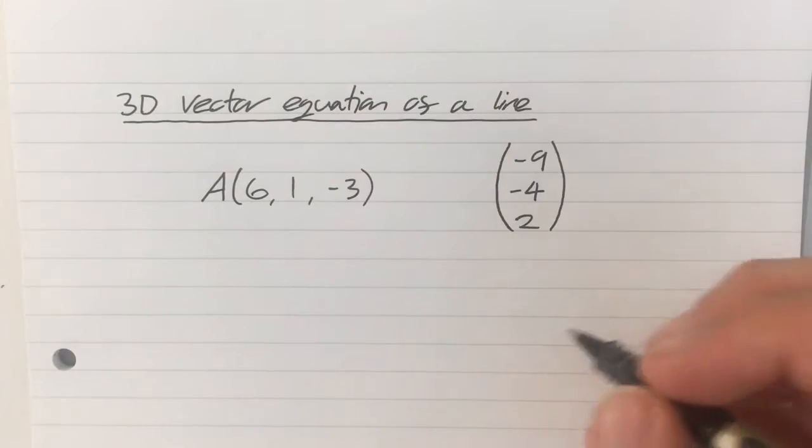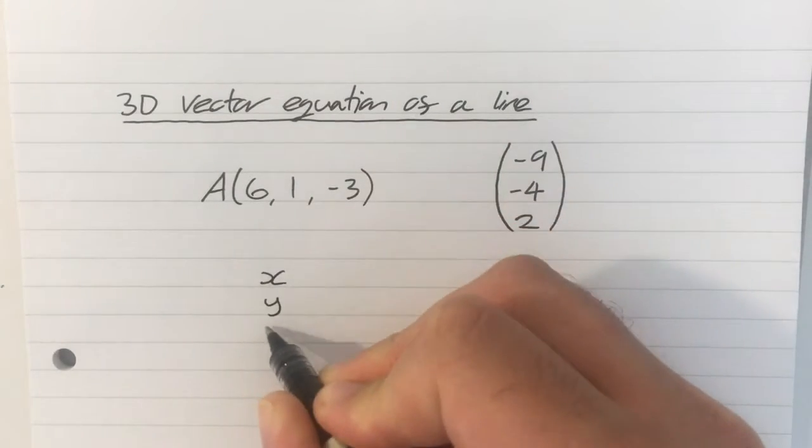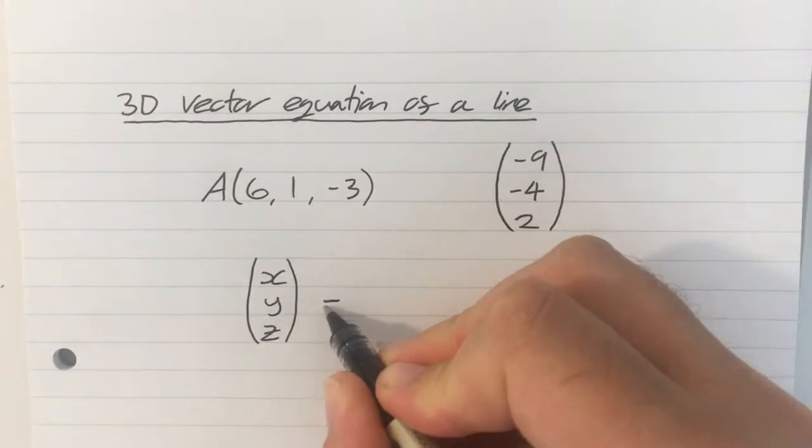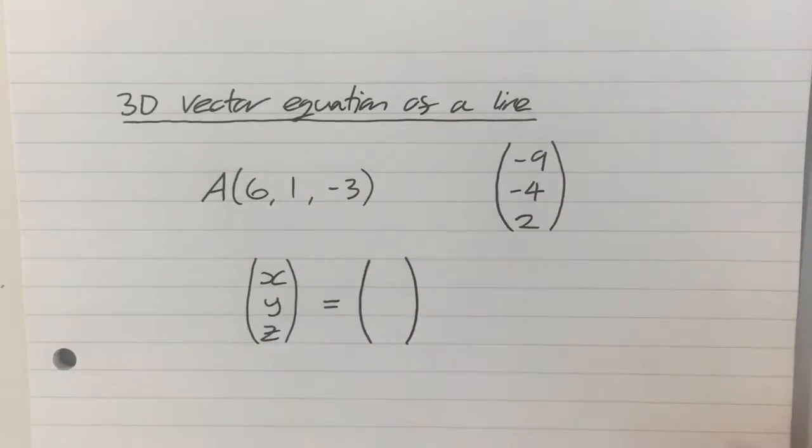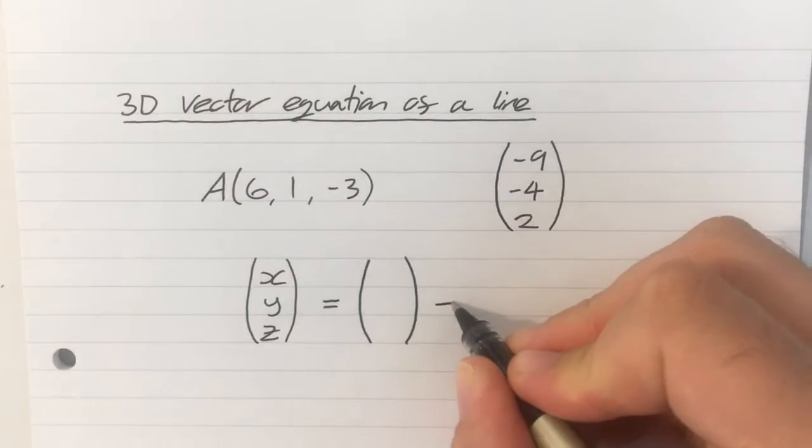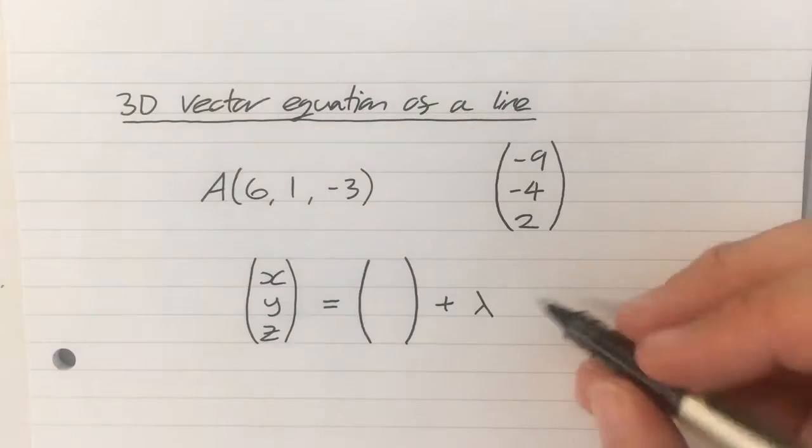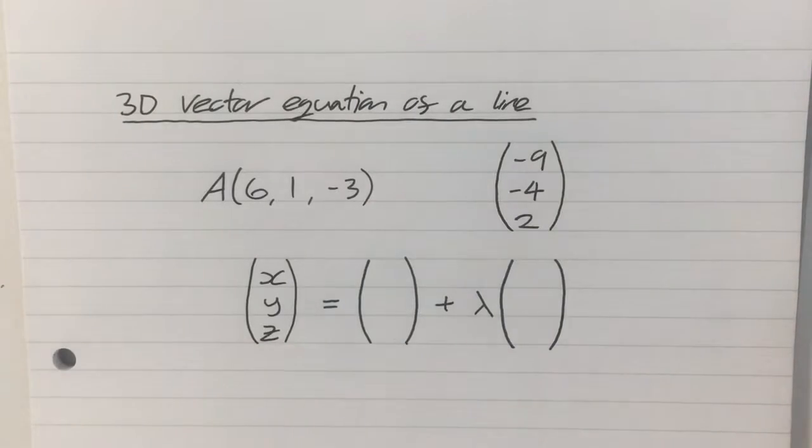And we take this exactly the same as we did in the two-dimensional case, except now it's 3D. So it's going to be x, y, z, now in three dimensions, is equal to the position vector of some point on the line, plus lambda, which is our parameter, which will move us up and down the line, multiplied by some vector, which is the direction of the line.